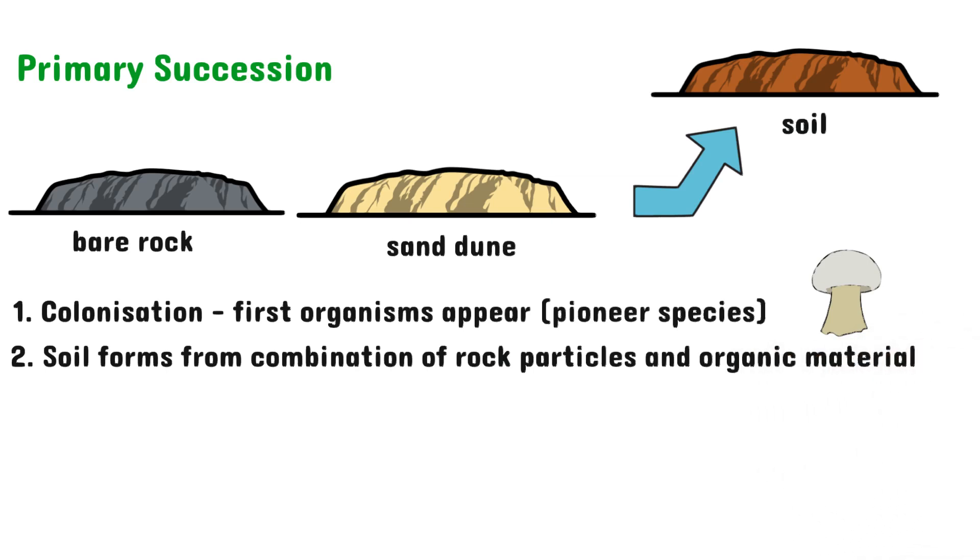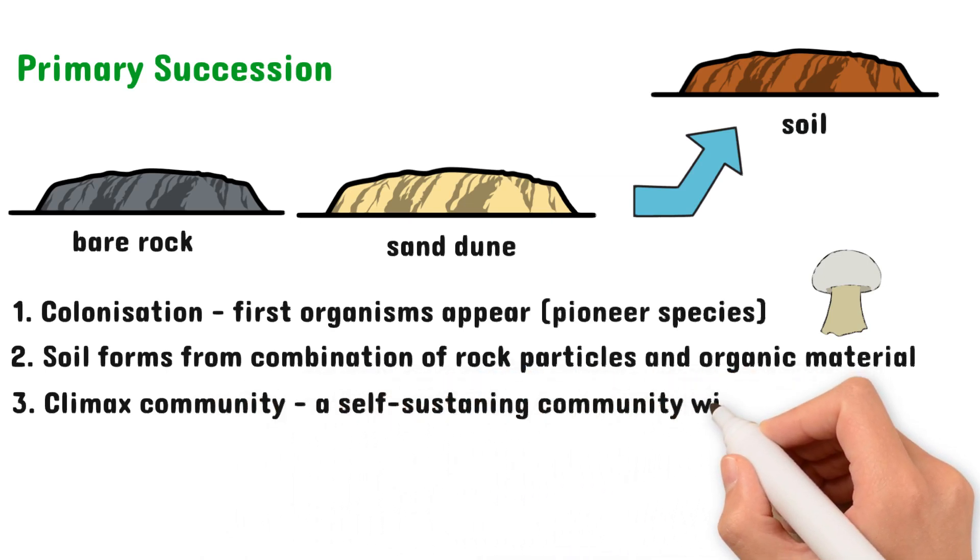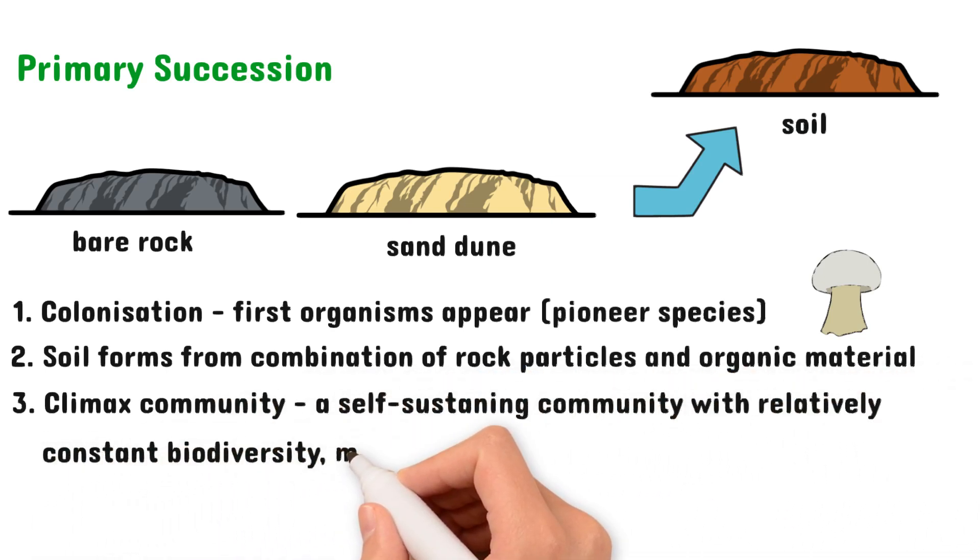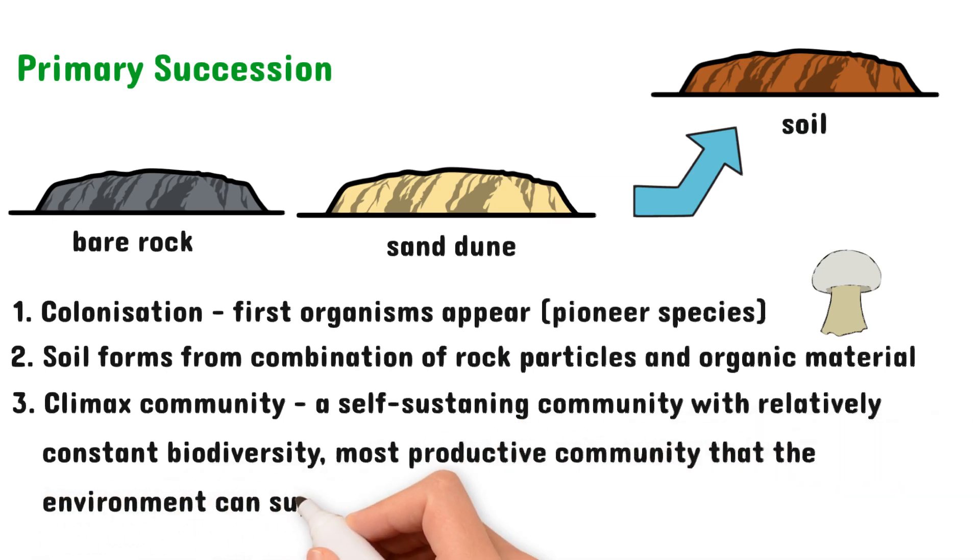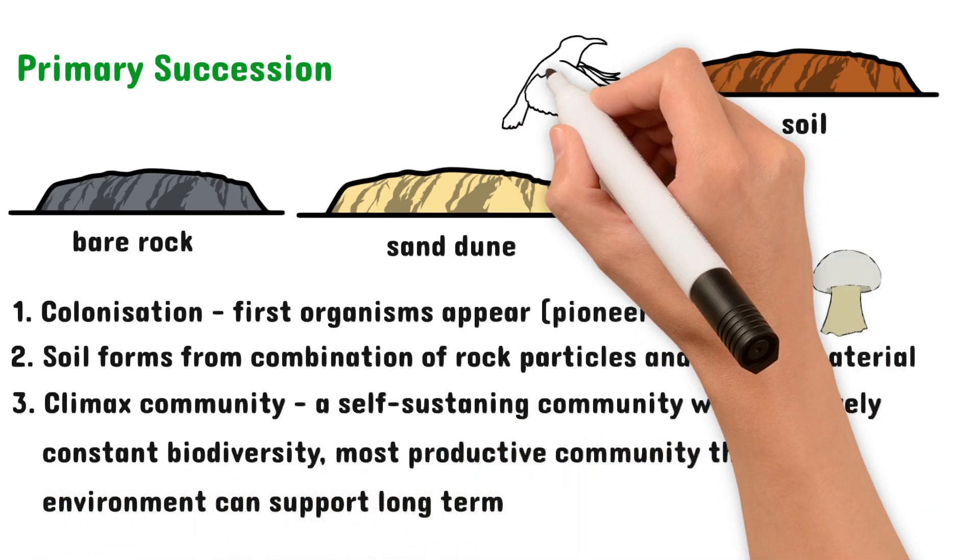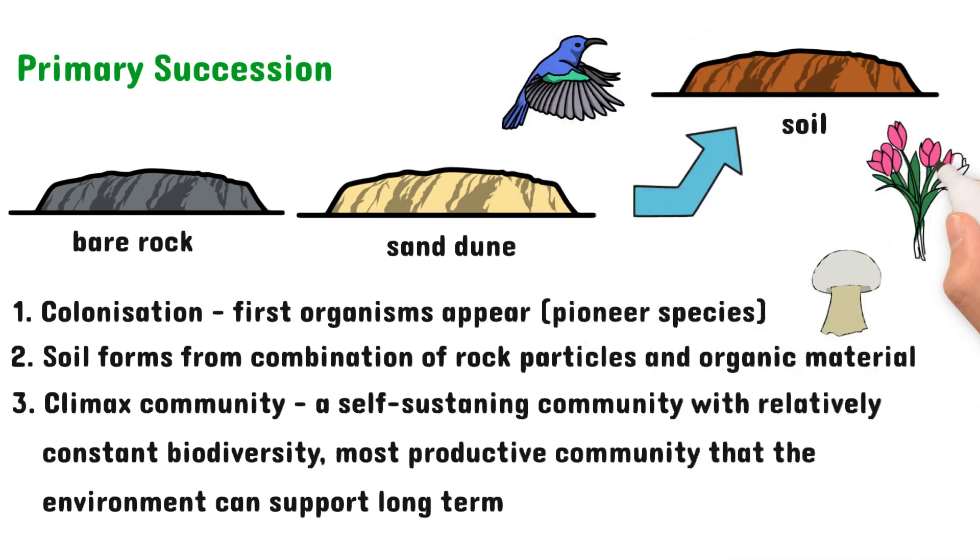The final stage is the establishment of a climax community. This is a self-sustaining community with relatively constant biodiversity. You could also think of it as the most productive community that the environment can support long term, and it will involve more complex animals, varied plants and so on.